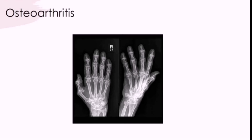Osteoarthritis is a degenerative joint disease related to wear and tear. The radiographic signs include asymmetrical joint space narrowing — compared to the symmetrical narrowing seen in rheumatoid arthritis — sclerotic bone margins where the edges of bone appear denser, and osteophytes, which are small extra bits of bone found within the joint or at the base of bones.